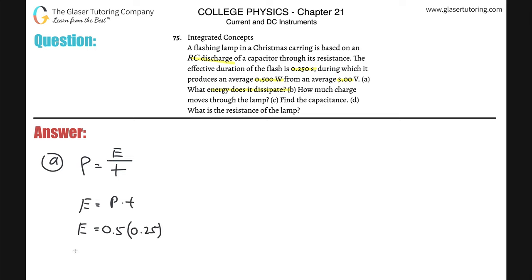We have the appropriate units, so throw that into the calculator. Half of 0.25 is going to be 0.125, and with three sig figs, that's going to be in joules.